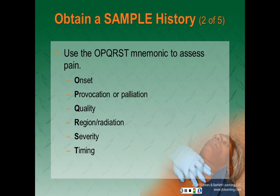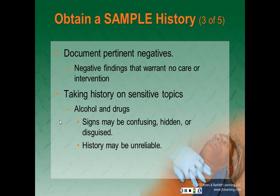We use OPQRST to assess for pain. O for onset — when did the problem start and what caused it? P for provocation or palliation — does anything make it better or worse? Q for quality — what is it like, sharp or dull? R for region or radiation — where does it hurt and does it move anywhere? S for severity — on a scale of 1 to 10, with 10 being the worst pain ever, what number would you give it? T for timing — has it been constant or does it come and go? Document all pertinent negatives — findings that are negative but warrant documentation, for example if a patient with chest pain does not have difficulty breathing.